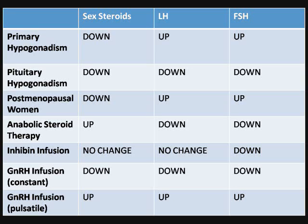For GnRH infusion via a pulsatile pattern, there is an increase in sex steroids, increase in LH, and increase in FSH. Decreasing LH removes the stimulus for the Leydig cells, causing Leydig cell atrophy, which means no local production of testosterone. Since testosterone is inherently required for spermatogenesis, there is a decrease in spermatogenesis and therefore an increase in rates of infertility.